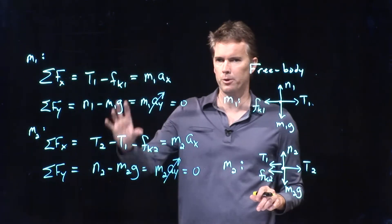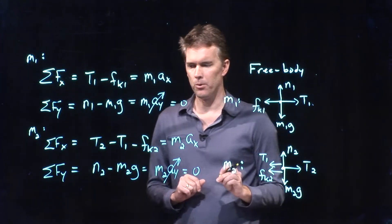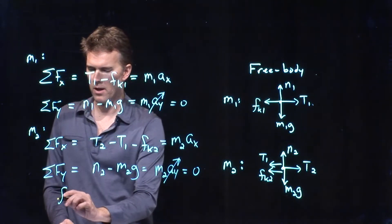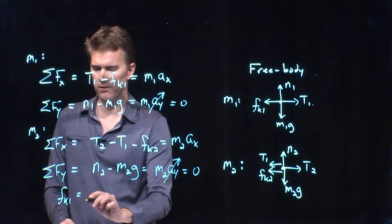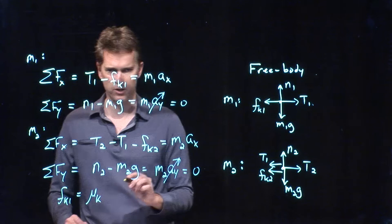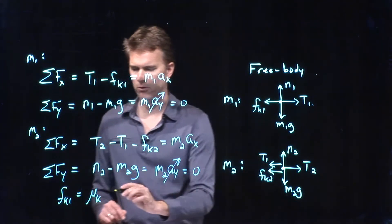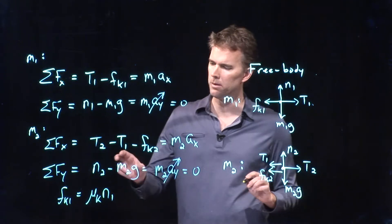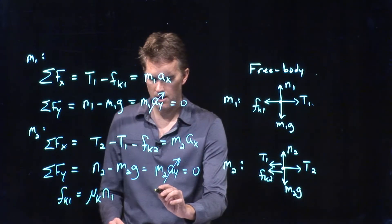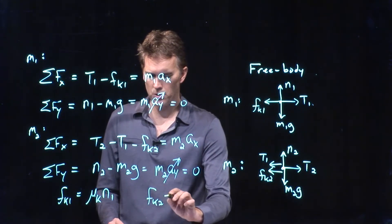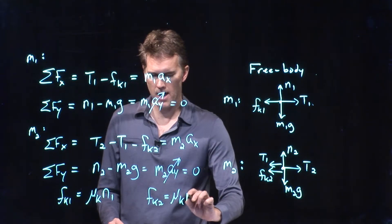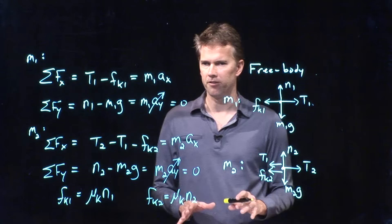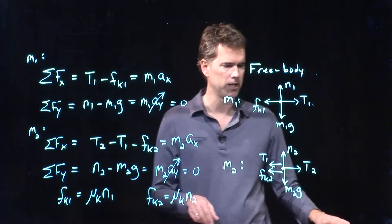We have four equations now. But we need a couple more, which are the friction equations. Friction is equal to the coefficient of friction times the normal force. So FK1 would be mu K times N1. FK2 is mu K times N2. And now let's see if we can put all this stuff together and solve for the tension T1.